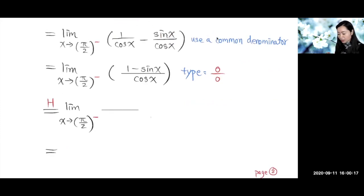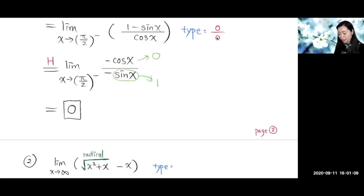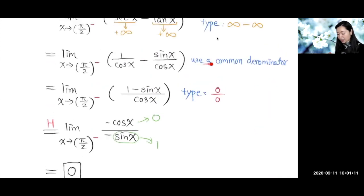Applying L'Hôpital's rule, we differentiate the numerator to get negative cosine x, and differentiate the denominator to get negative sine x. As x approaches π/2 from the left side, cosine x approaches zero and sine x approaches one, giving zero over negative one, which is zero. So the limit is zero, found using the common denominator method.